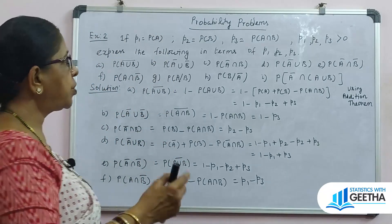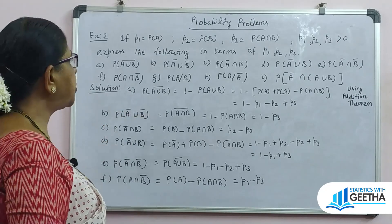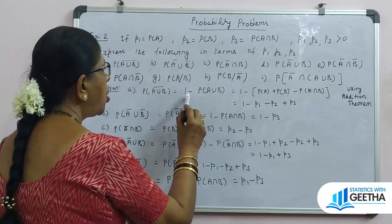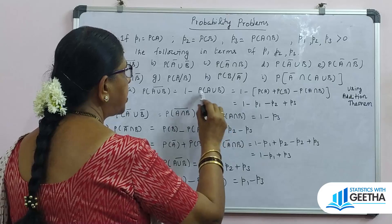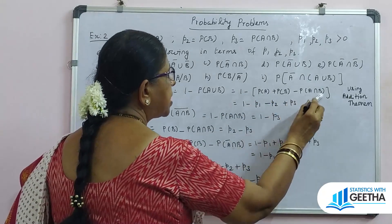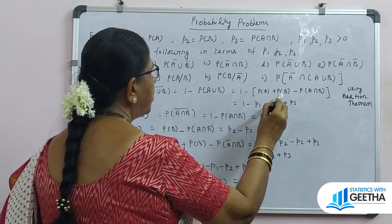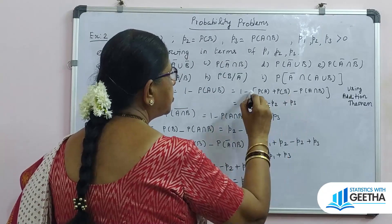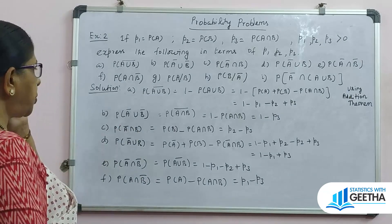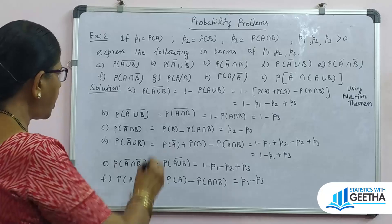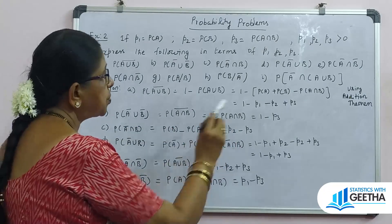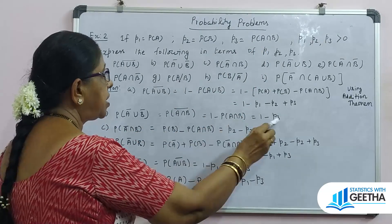For (a): probability of (A union B) complement equals 1 minus P(A union B). Applying the addition theorem: P(A union B) equals P(A) plus P(B) minus P(A intersection B), so the answer is 1 minus P1 minus P2 plus P3. For (b): P(A complement union B complement) equals P((A intersection B) complement) by De Morgan's law, which equals 1 minus P(A intersection B) equals 1 minus P3.